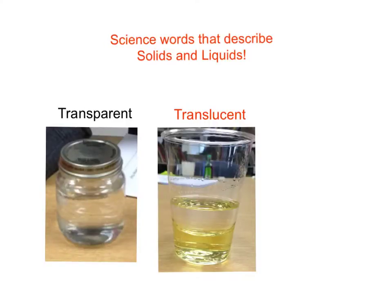Translucent: an object or liquid that lets some light go through. For example, a bathroom window or juice.